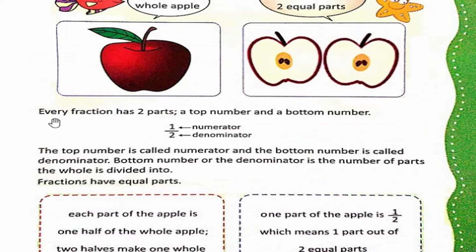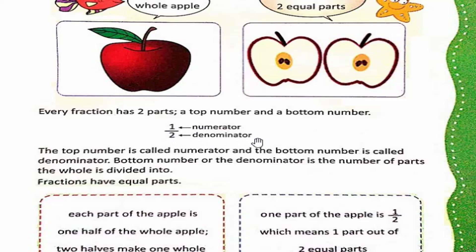Every fraction has two parts — her fraction mein dho part hote hain. A top number and a bottom number. Fraction ko hum is tarah likhte hain: one by two. Ek number upar hota hai aur ek number niche hota hai. Upar wale number ko numerator aur niche wale number ko denominator kehte hain. The top number is called numerator and the bottom number is called denominator.